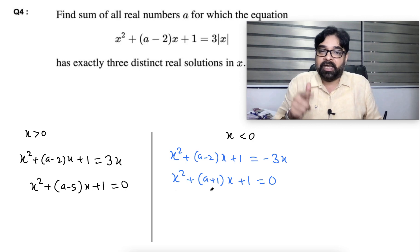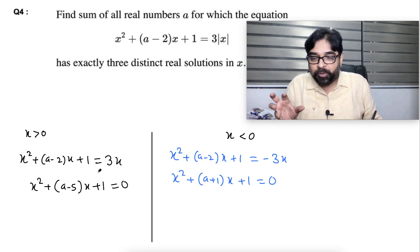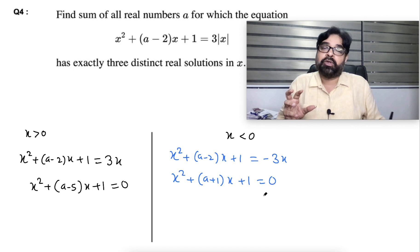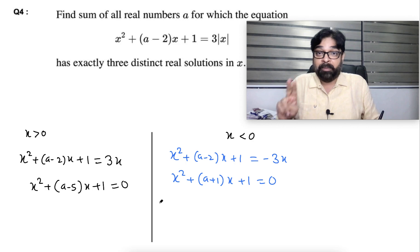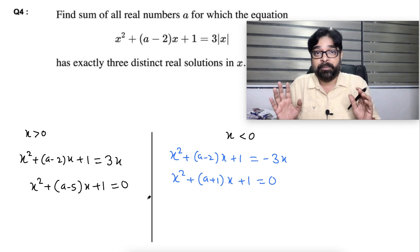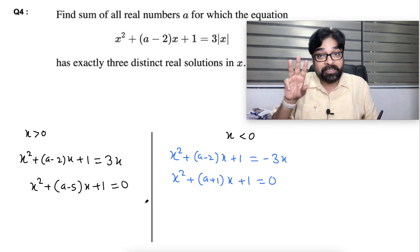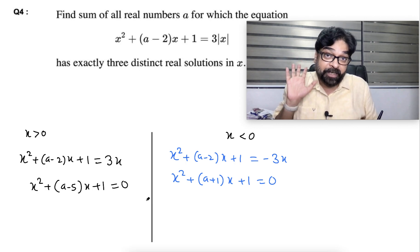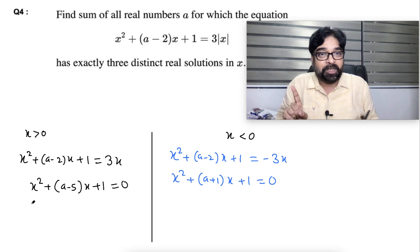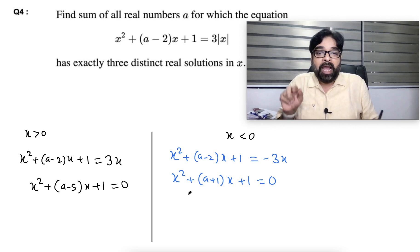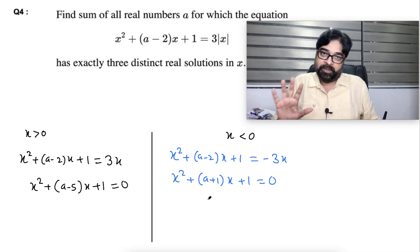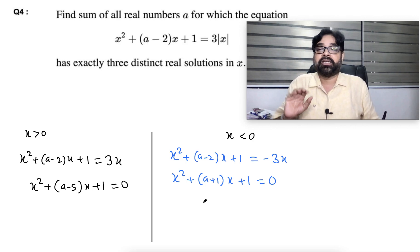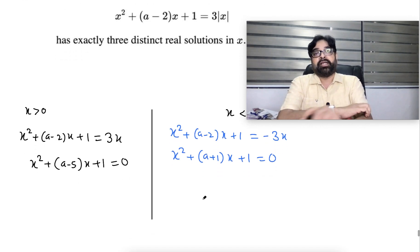So there are two quadratics: one for x > 0 and one for x < 0. Each can give up to two roots, so four roots total are possible. Remember, if a quadratic gives imaginary roots it gives no real roots — it either gives real or imaginary. To get exactly three different real roots, only one quadratic must give two different roots and the other must give exactly one equal (repeated) root.